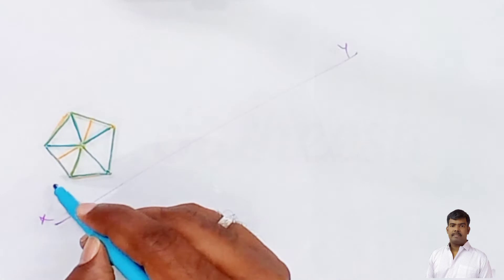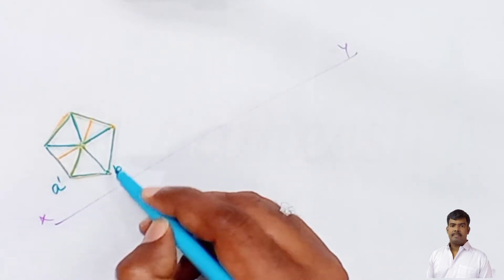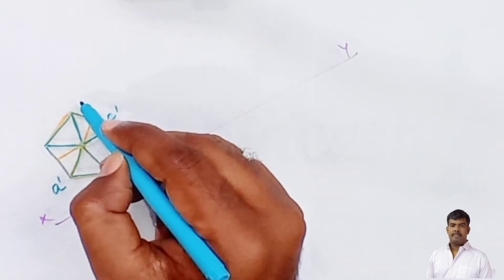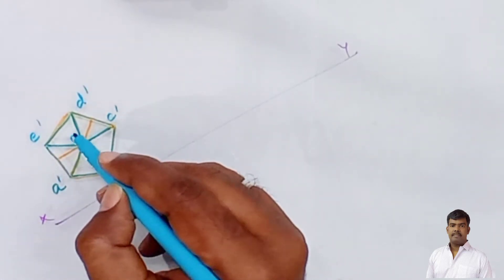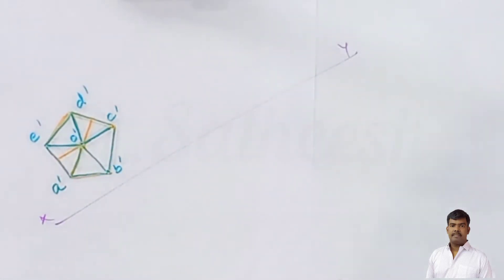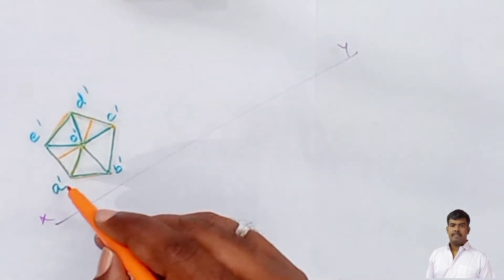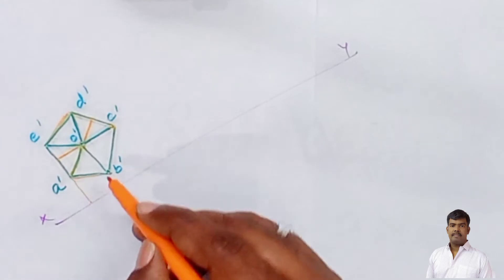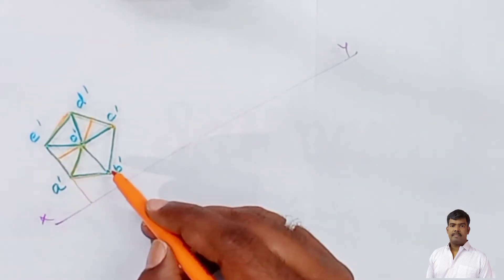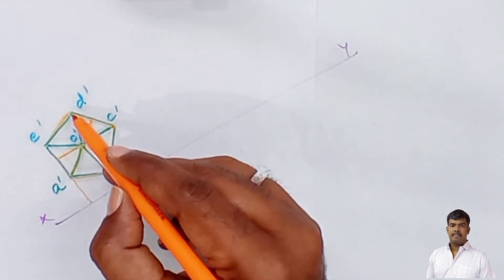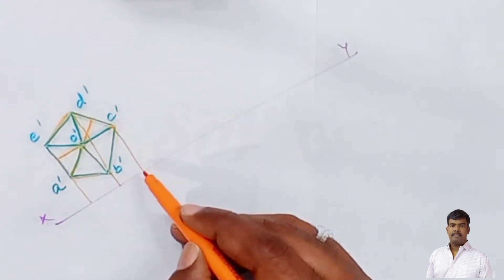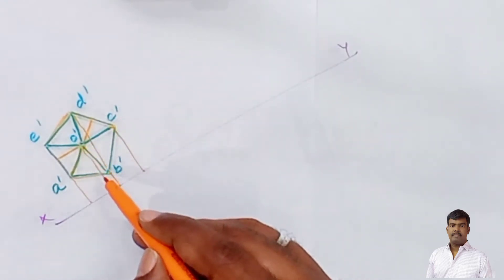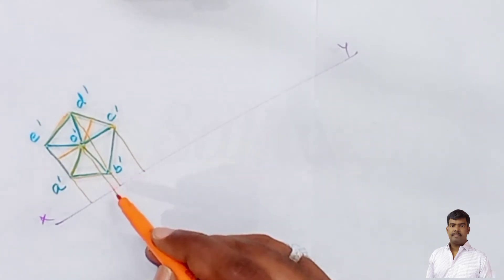Label the vertices as a-dash, b-dash, c-dash, d-dash, e-dash, and the apex as o-dash. Then draw projection lines toward the top view from e, a, d, b, c, and the center.